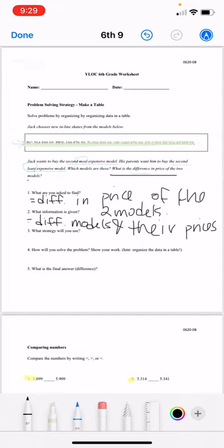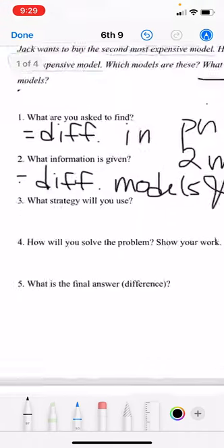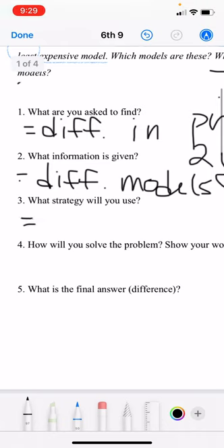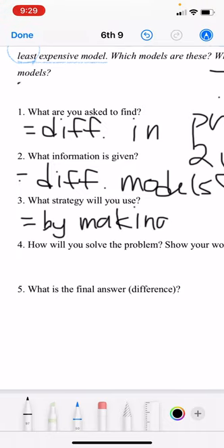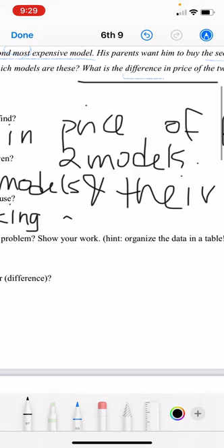Number three. What strategy will you use? Well, can you guess? It's pretty obvious, isn't it? It says make a table, so we're going to make a table. By making a table. A table.